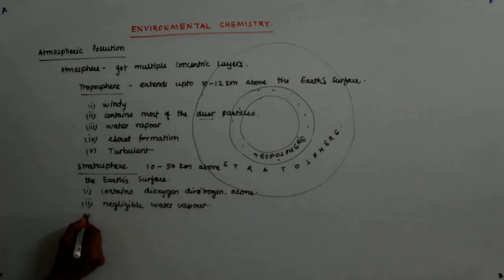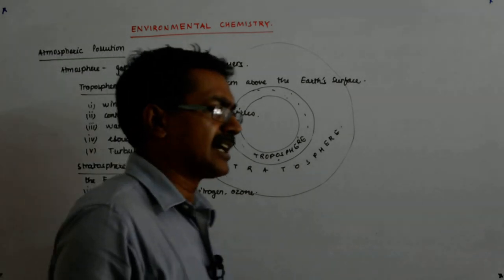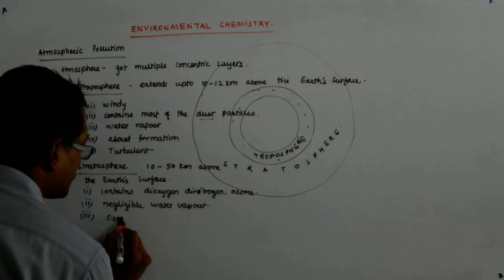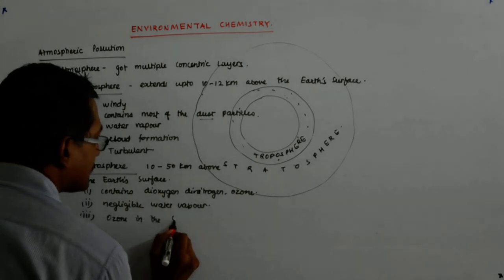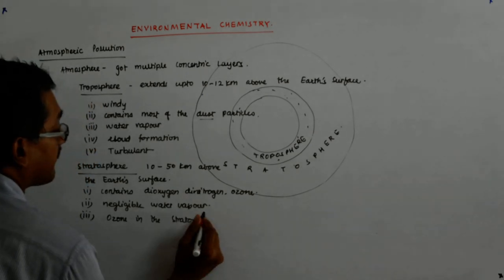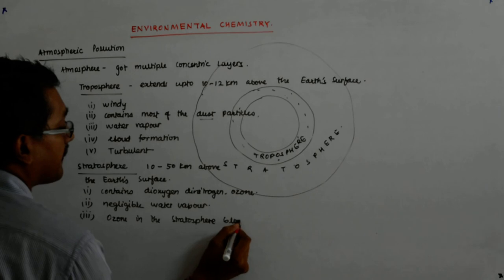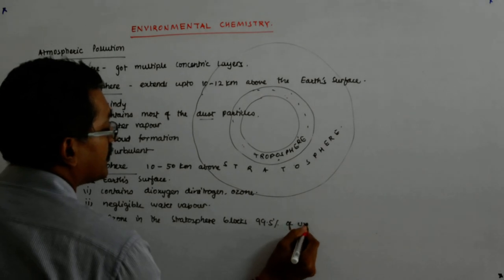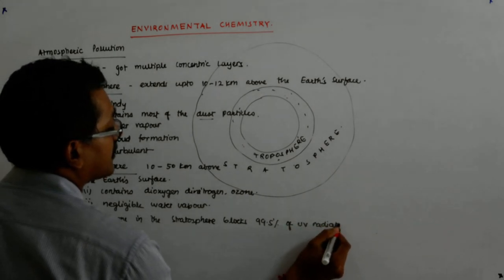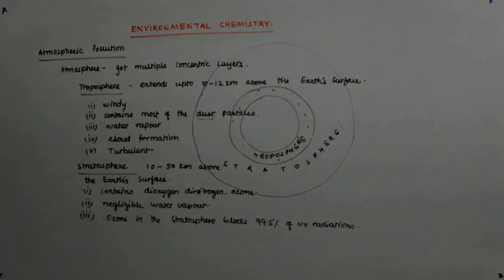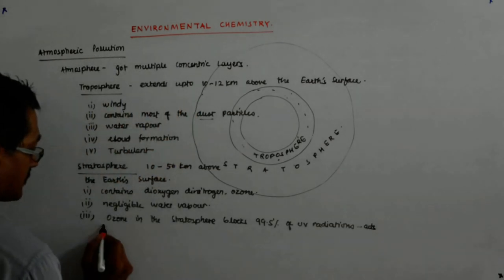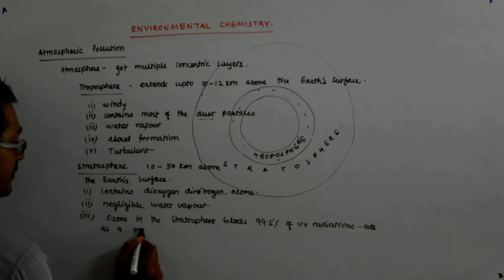Now what happens? The ozone present there actually blocks more than 99% of the UV radiations, and that's how we are shielded. So the ozone in the stratosphere blocks 99.5% of UV radiations and hence acts as a protective blanket for the Earth.